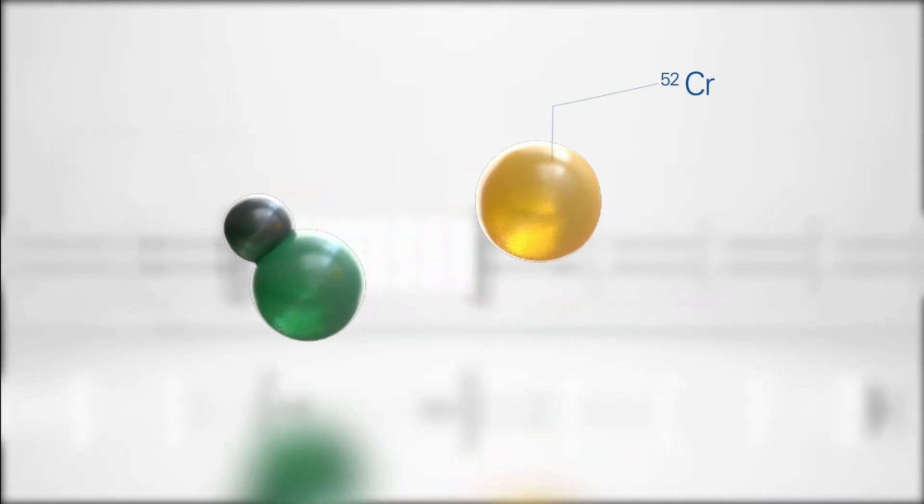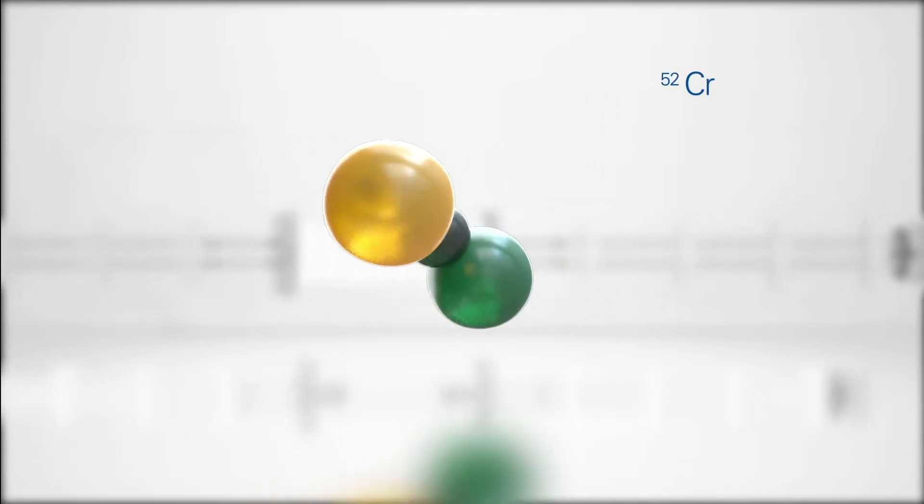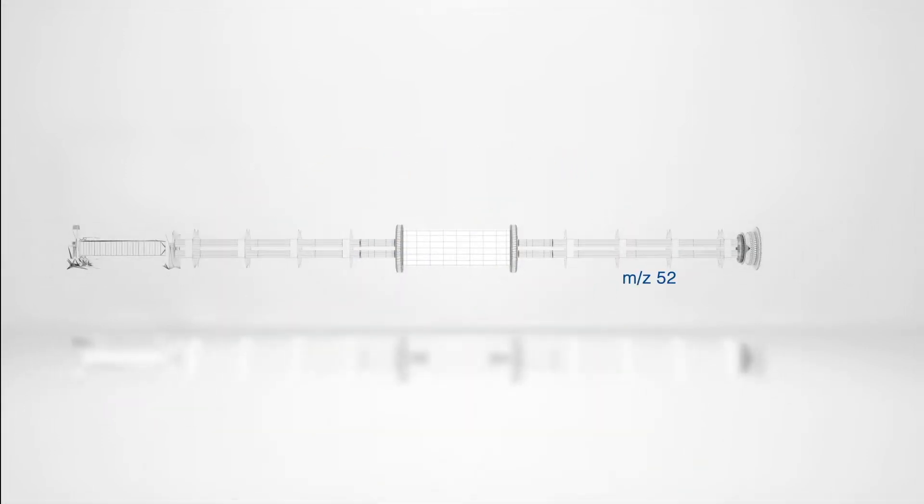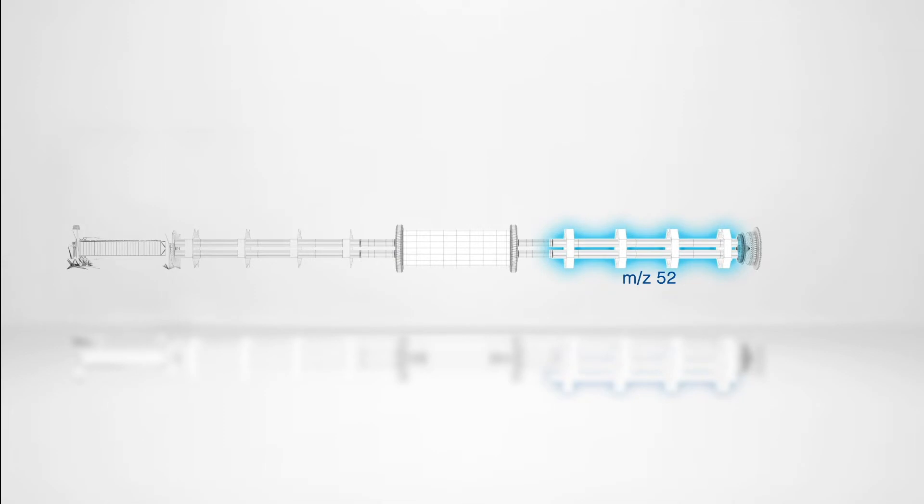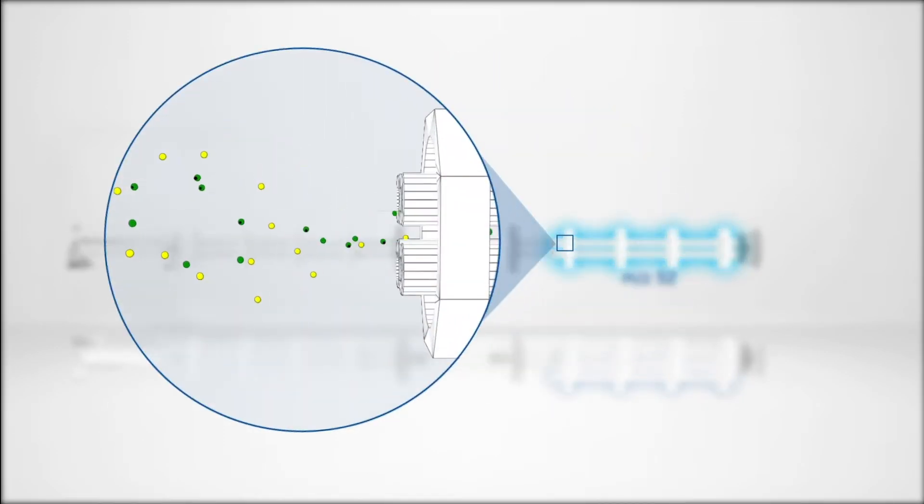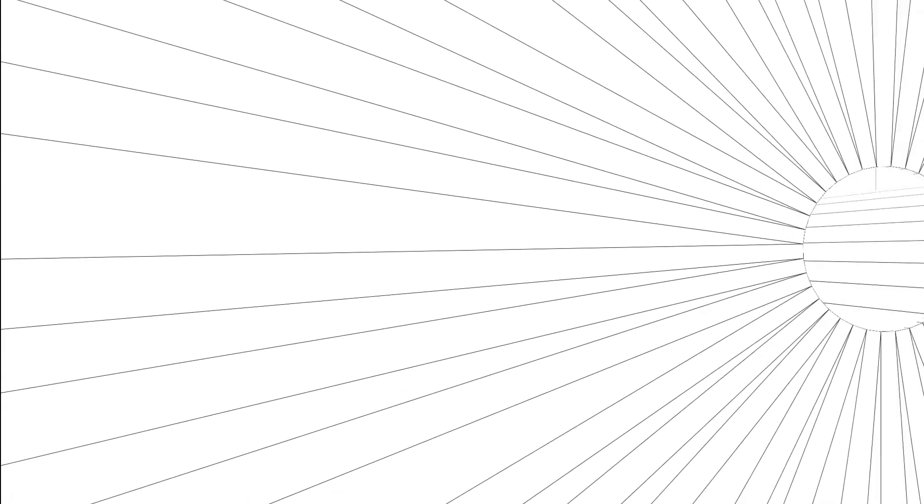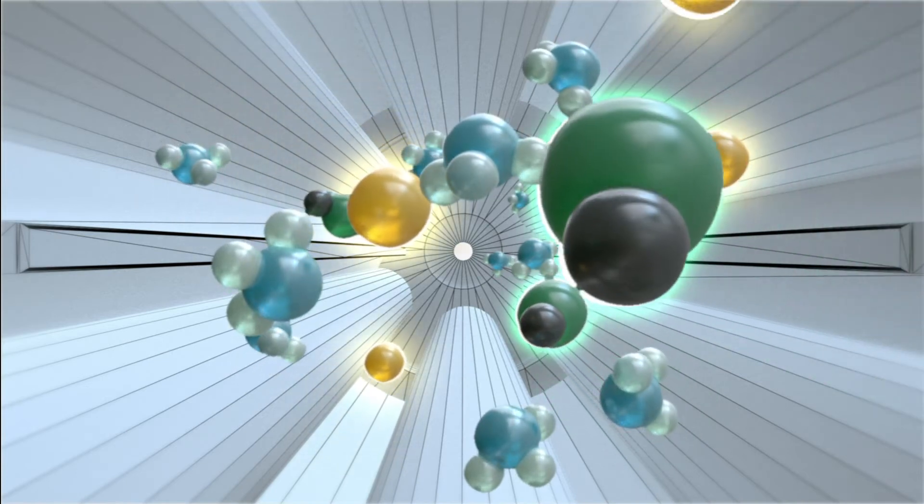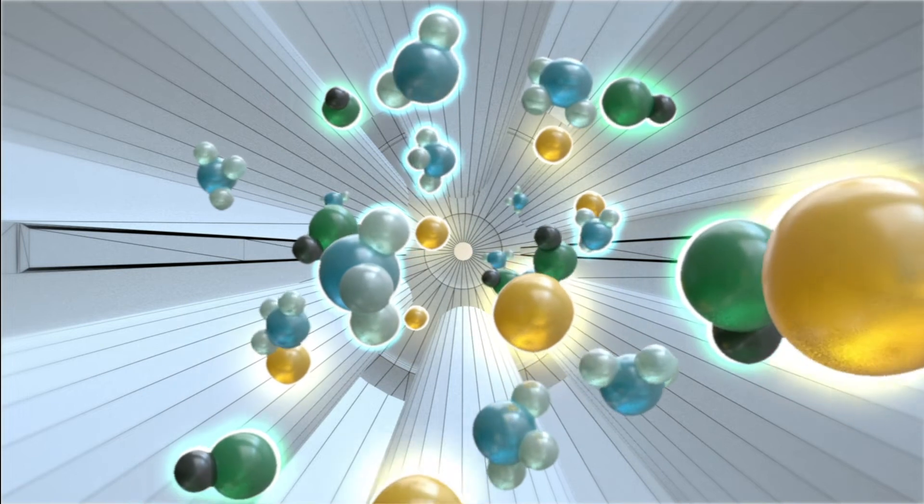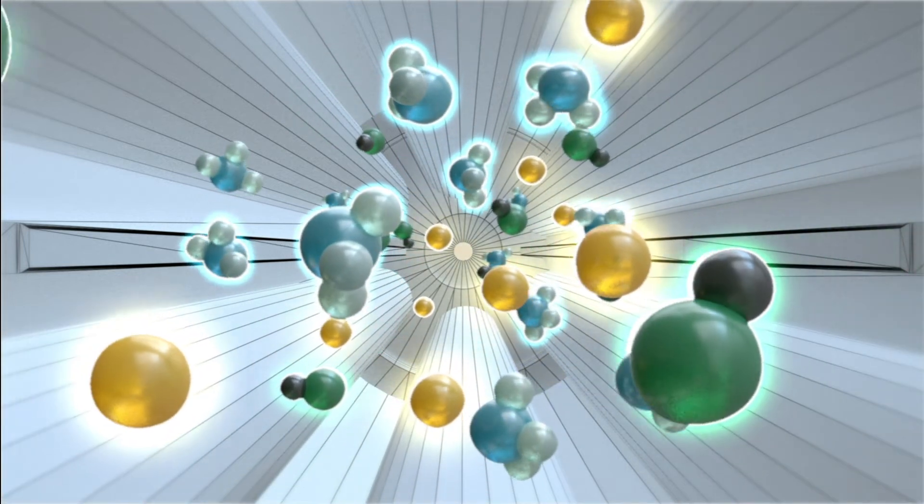Take, for example, the measurement of chromium impurity in high carbon content matrices, such as organic solvents or biological samples. Mass 52 is selected in the first analyzer quadrupole. Only ions at this mass are transmitted to the entrance of the cell. In the cell, the argon carbon polyatomic ion interference reacts with the reaction gas, losing its positive charge.